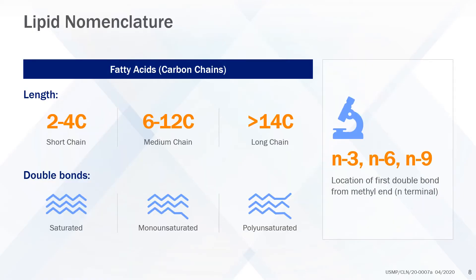Fatty acids are classified using a variety of nomenclatures. Fatty acids may be classified by chain length into short, containing 2 to 4 carbons; medium, containing 6 to 12 carbons; and long chain fatty acids containing 14 or more carbons. Most fatty acids in lipid emulsions are long chain fatty acids.